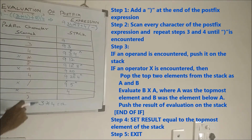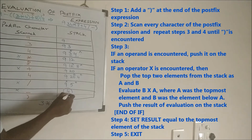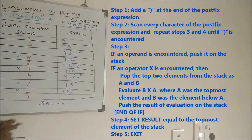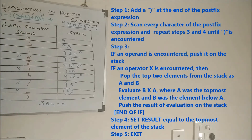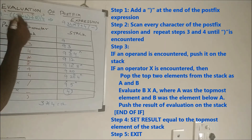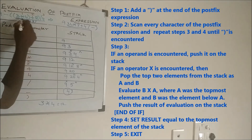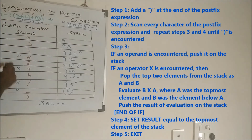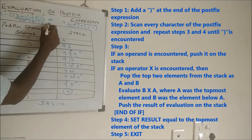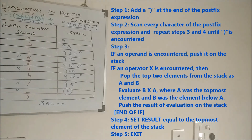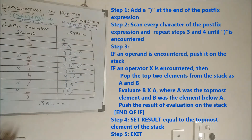Next is the minus operator: A is 5, B is 9, so B minus A is 9 minus 5 = 4. Push 4. Next is close parenthesis — we stop. The answer is 4. We can verify: 3×4=12, 12+8=20, 20÷4=5, 9−5=4. The answer is 4. This is how to evaluate a post-fix expression using the given algorithm.